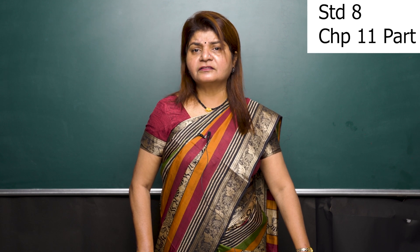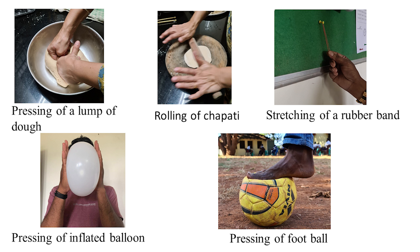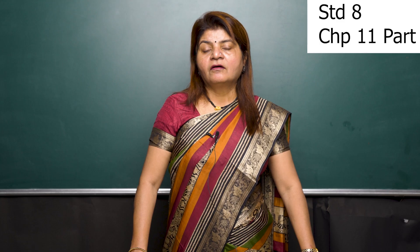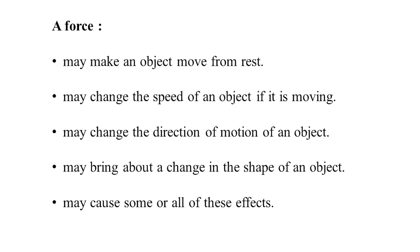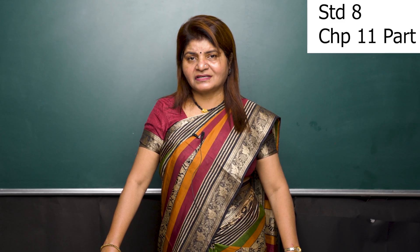A force can also change the shape of an object. Examples include pressing a lump of dough, rolling of chapati, stretching a rubber band, pressing an inflated balloon, and pressing a football — all result in a change in shape. From all these examples we can conclude that a force may make an object move from rest, change the speed of a moving object, change the direction of motion, or bring about a change in the shape of an object.